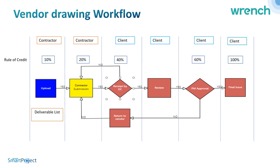For vendor drawings, where somebody externally is creating those drawings, you can have a vendor deliverable list and specify the process by which these vendor drawings are reviewed and approved through this workflow. You can specify what activities are done by the vendor and what activities are done by the client — whether it's a document controller or an IDC process — and rules of credit can be applied so that when activities are completed you earn the progress.